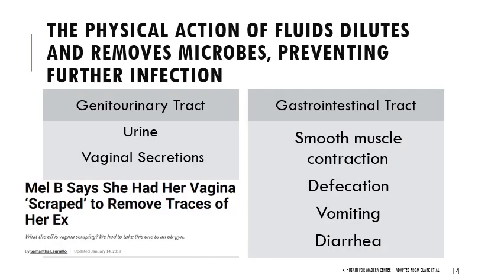There's also the physical action of fluids. For example, urine is very important for clearing bacteria out of our urethra. It's important to urinate after sex because that mechanism ensures bacteria don't travel up the urethra and cause UTIs. People with vaginas are especially sensitive to this because they have a much shorter urethra.